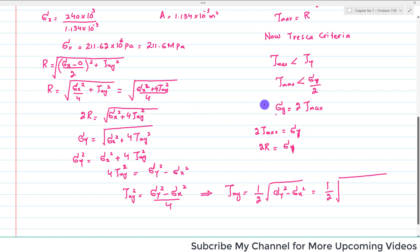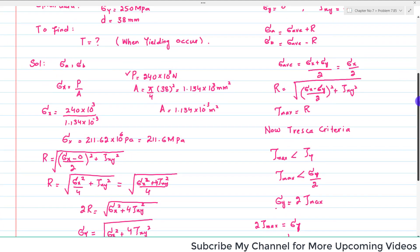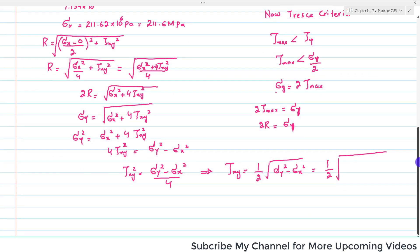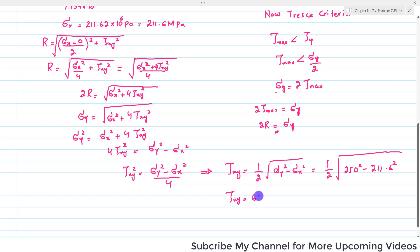Plugging in the values: σ_yield = 250 MPa and σ_x = 211.62 MPa. So τ_xy = (1/2) × √(250² − 211.62²), which gives τ_xy = 66.53 mega Pascal.